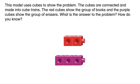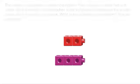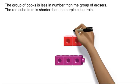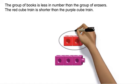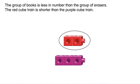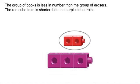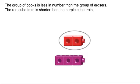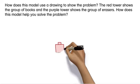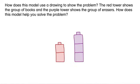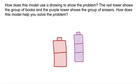The purple cubes show the group of erasers. What is the answer to the problem? How do you know? The group of books is less in number than the group of erasers because the red cube train is shorter than the purple cube train. How does this model use a drawing to show the problem? The red tower shows the group of books.